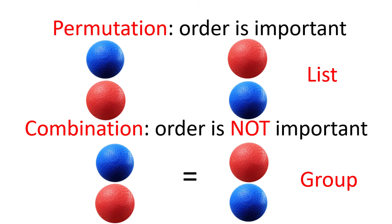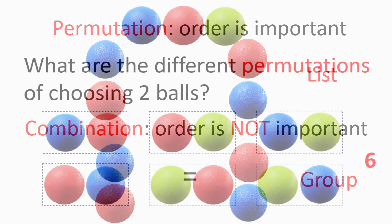Simply put, for permutation, order is important, while for combination, order is not important. As shown here, choosing blue ball followed by red ball is the same combination as choosing red ball first then blue. In combination, we are only concerned with who is in the group, and not the order of how we list the group.